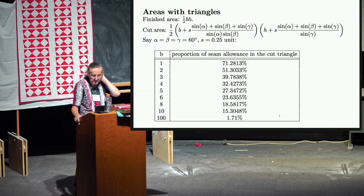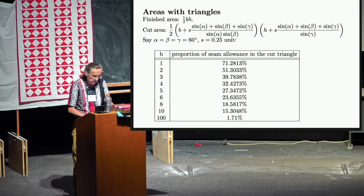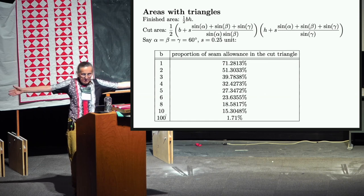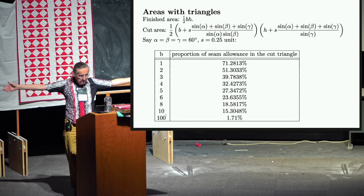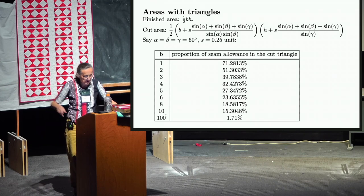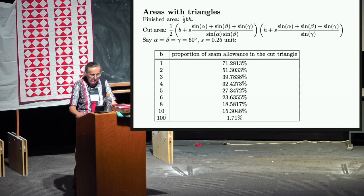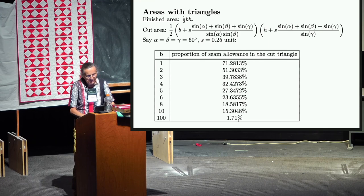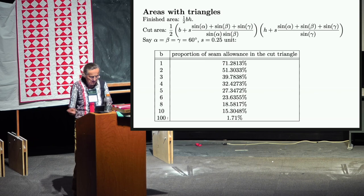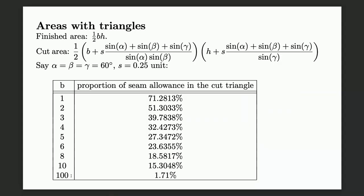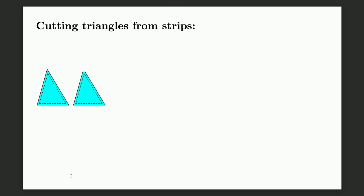You see more and more of your fabric as triangles get larger. For a triangle about 2.5 meters wide with a quarter-inch seam allowance, only 1.71% is unseen. But who makes triangles that are 2.5 meters wide?